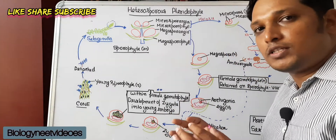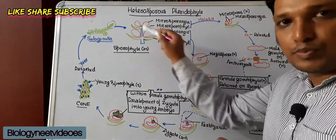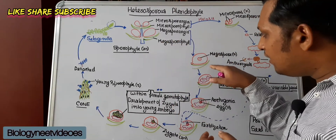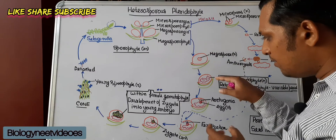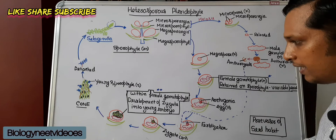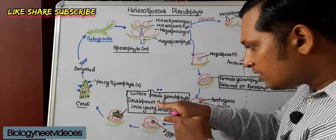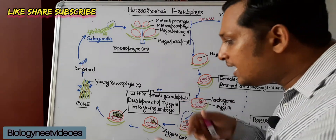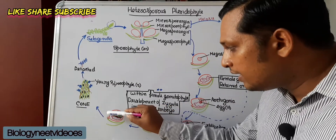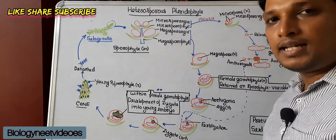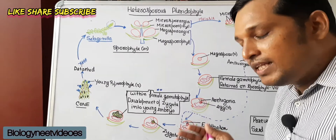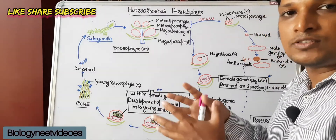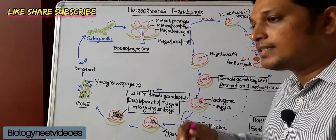The important features that connect heterosporous pteridophytes to seed habit are: two types of spore production — smaller microspores and larger megaspores; megaspores retained within the megasporangium with the female gametophyte retained on the sporophyte for a variable period; and development of a young embryo within the megasporangium. The reason a true seed was not formed is that integument around the megasporangium is lacking, and the young embryo does not go into dormancy to germinate only under appropriate conditions. Hence, it has not formed a true seed, but it is the point where seed formation began.